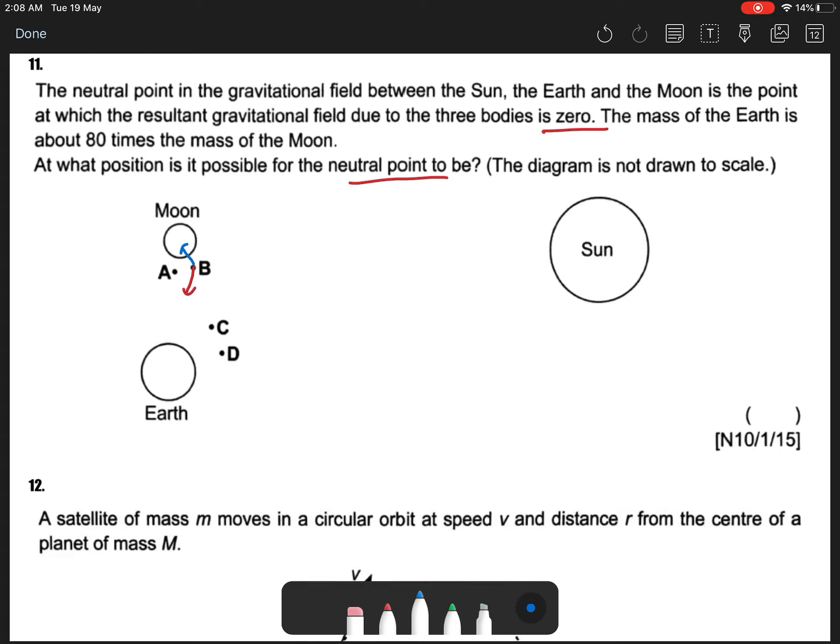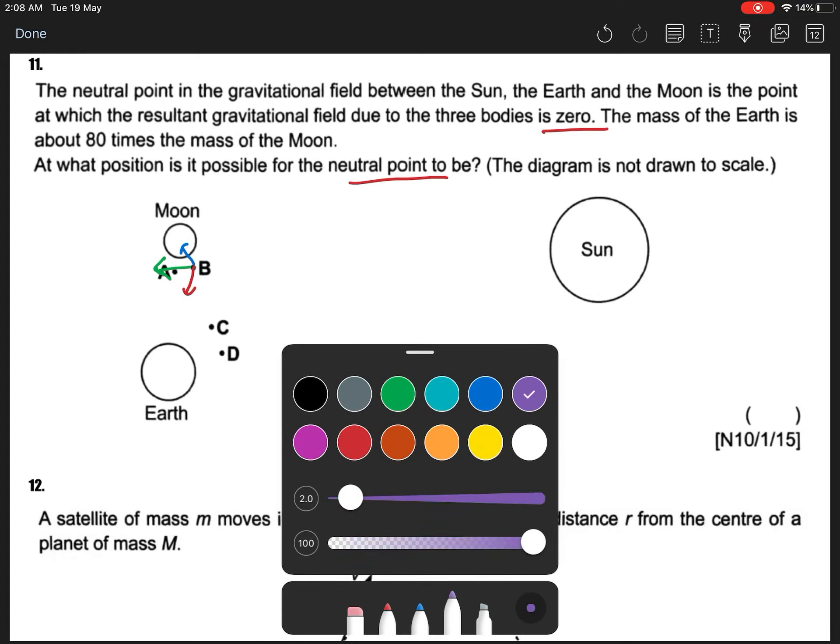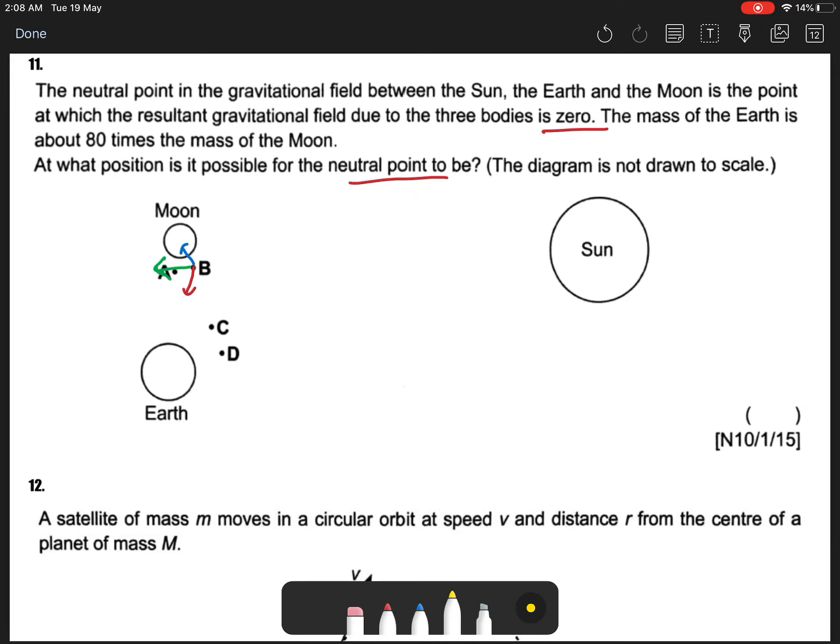The resultant field may be in this direction. So the sun will create a field in the opposite direction to my green arrow.